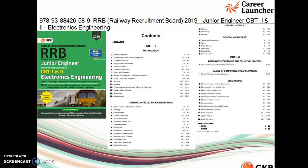As far as the content of this book is concerned, in CBT-1 we have Mathematics with 15 chapters, then Reasoning with 14 chapters, General Science covering Physics, Chemistry and Biology, and General Awareness with six chapters. Basics of Environment and Pollution Control, which is part of CBT-2, has one chapter. Then Basics of Computers and Applications.